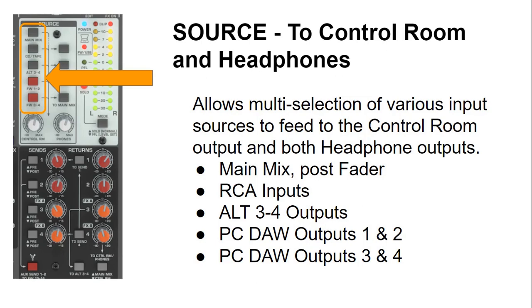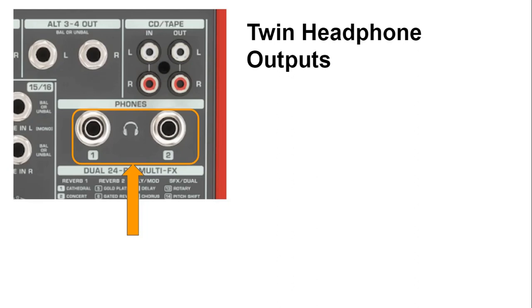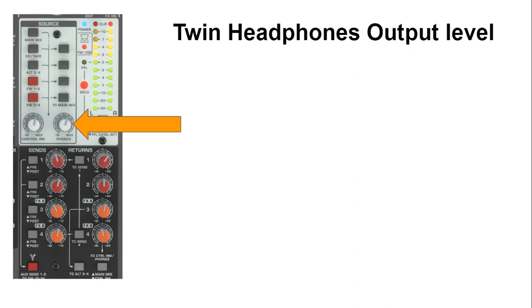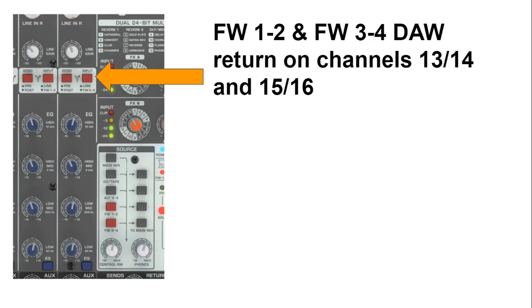You can select multiple audio sources to feed into your control room and the headphone output. The control room has its own independent volume to adjust the level going out to your monitor speakers, as well as an independent headphone level for the two headphone outputs.